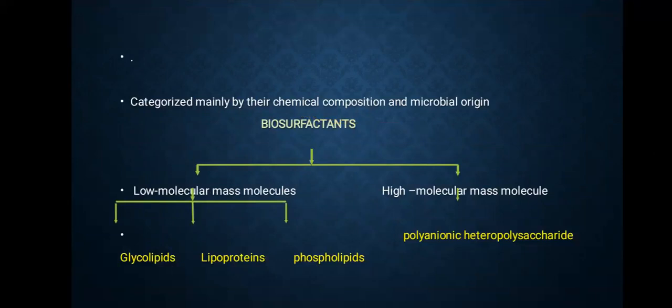Biosurfactants are categorized mainly by their chemical composition and microbial origin. They are of two types: low molecular mass molecules and high molecular mass molecules. Low molecular mass molecules are of three types: glycolipids, lipoproteins, and phospholipids, whereas high molecular mass molecules include polyanionic heteropolysaccharides.